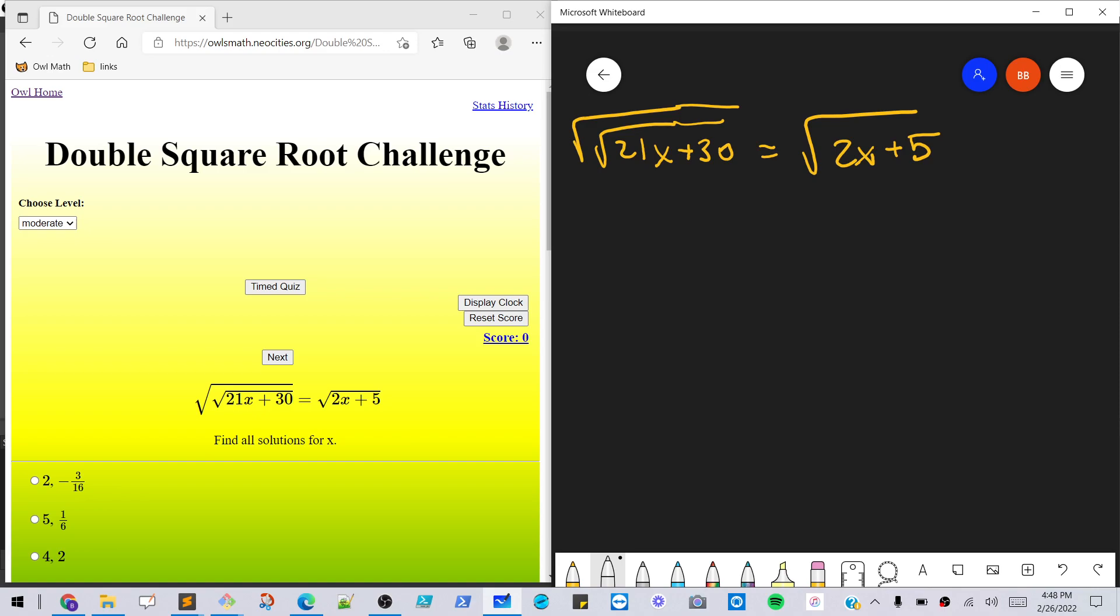Hi, so I have this problem on the board. We have a double square root on the left side, square root, and the square root of 21x plus 30 equals the square root of 2x plus 5.